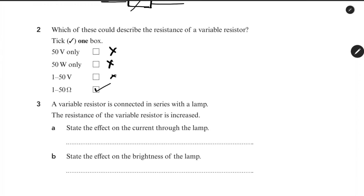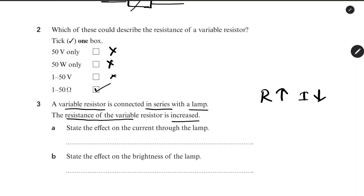Third question: a Variable Resistor is connected in series with a lamp. The resistance of the Variable Resistor is increased. State the effect on the current through the lamp. In a series circuit, if we increase the resistance, the current will decrease. So the effect on the current through the lamp is: decrease.